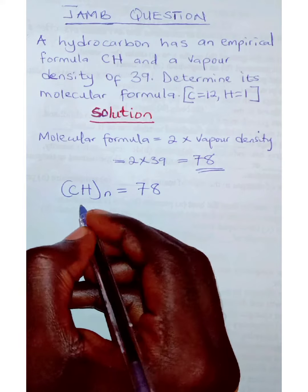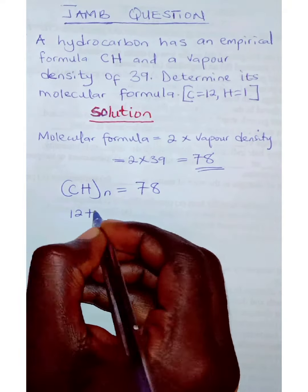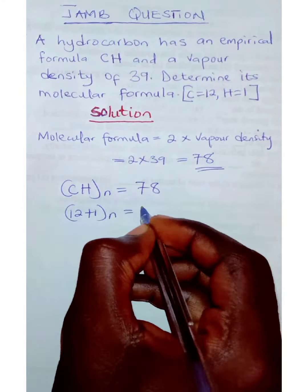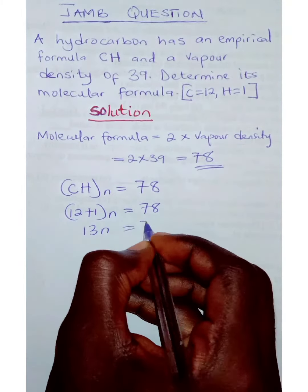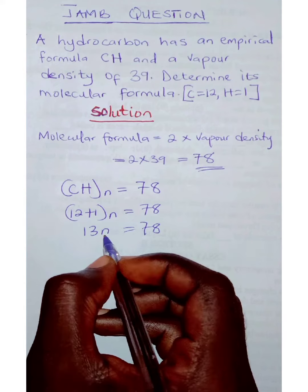So this is 12 plus 1 times n is equal to 78. And then by adding them up you have 13n is equal to 78. Now we make n the subject of the equation.